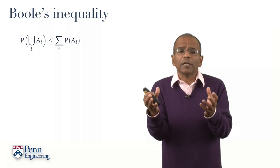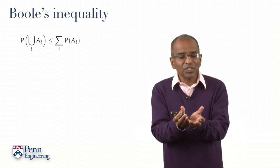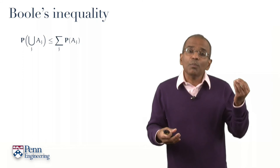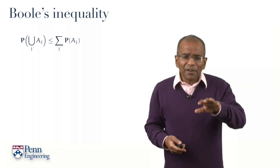Captured in language, it says something very simple. The probability of the union of a collection of events is no larger than the sum of the associated probabilities. Now, this is a very blunt instrument.